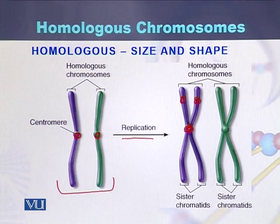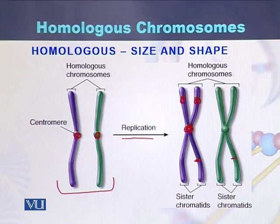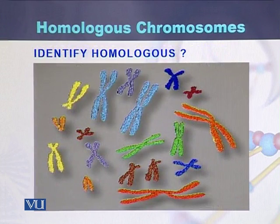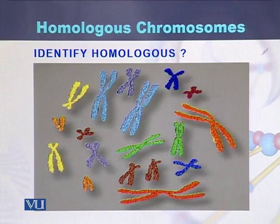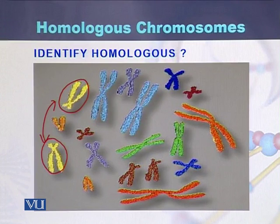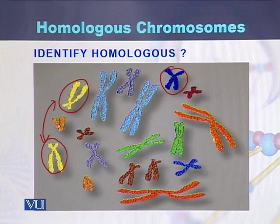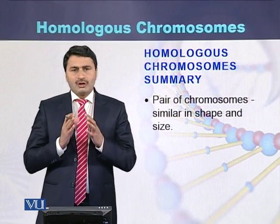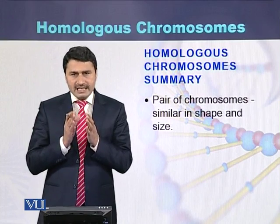In the case of replicated chromosomes, if one allele of a gene is at a certain position on one homologous chromosome, the second allele will be at the same position on the other homologous chromosome. From this diagram, we can identify which chromosomes are homologous — for example, this chromosome is homologous to this one, and these two chromosomes are homologous to each other. In conclusion, chromosomes which are similar in size and shape are called homologous chromosomes.